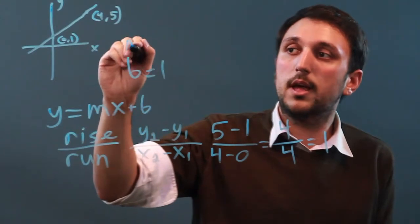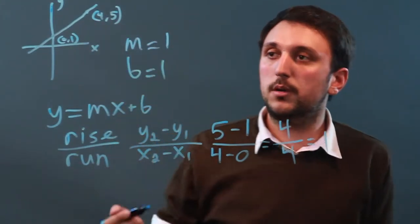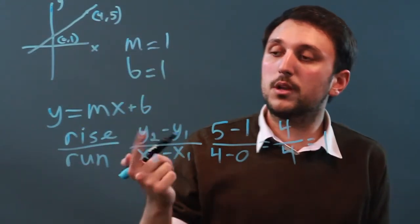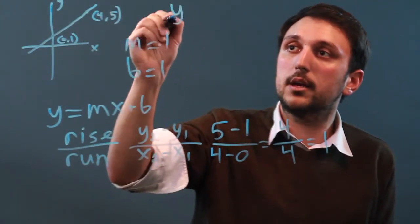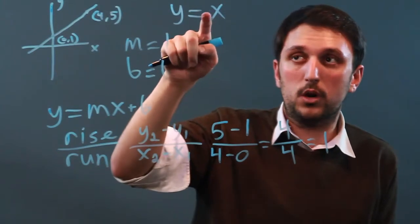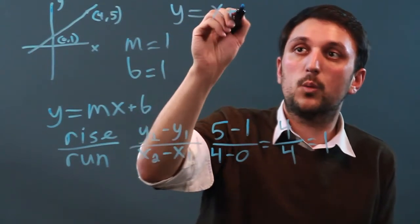So we have b equals 1 and m equals 1. So now we've determined the equation for this line, and that line will be y equals x, because it's just 1 times x, plus 1.